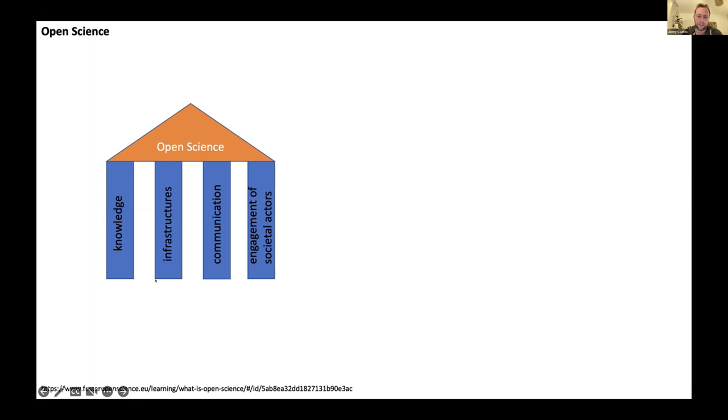None of this is possible without a good solid infrastructure. And the open infrastructure is not just about having things in place that allow us to do things, like having a preprint server that lets you post a preprint. It's also about making those infrastructures themselves open. So Europe PMC, for example, is a platform that allows us to put a lot of research out there, but it's built on open code. And so it's accessible to everyone and people can build on that and use it for their own purposes.